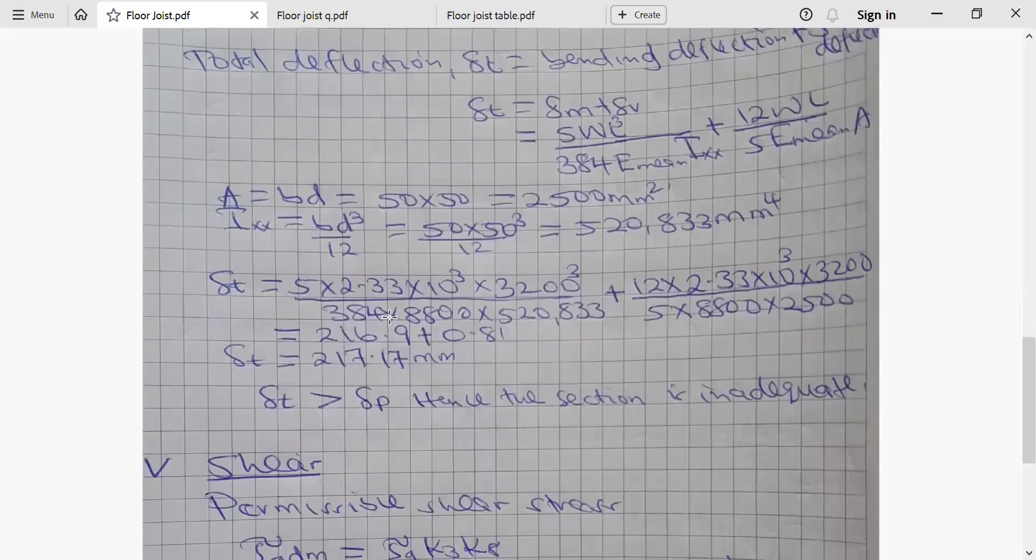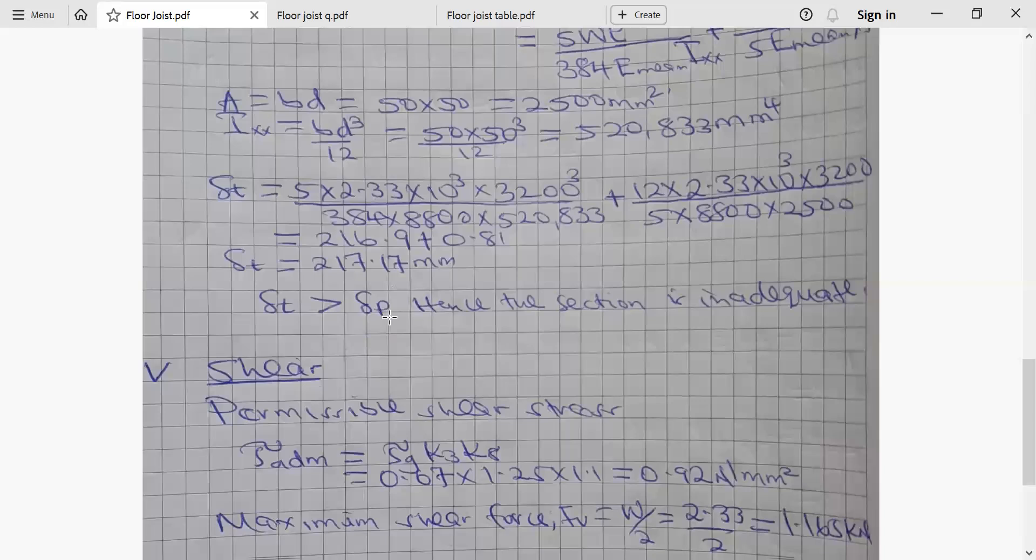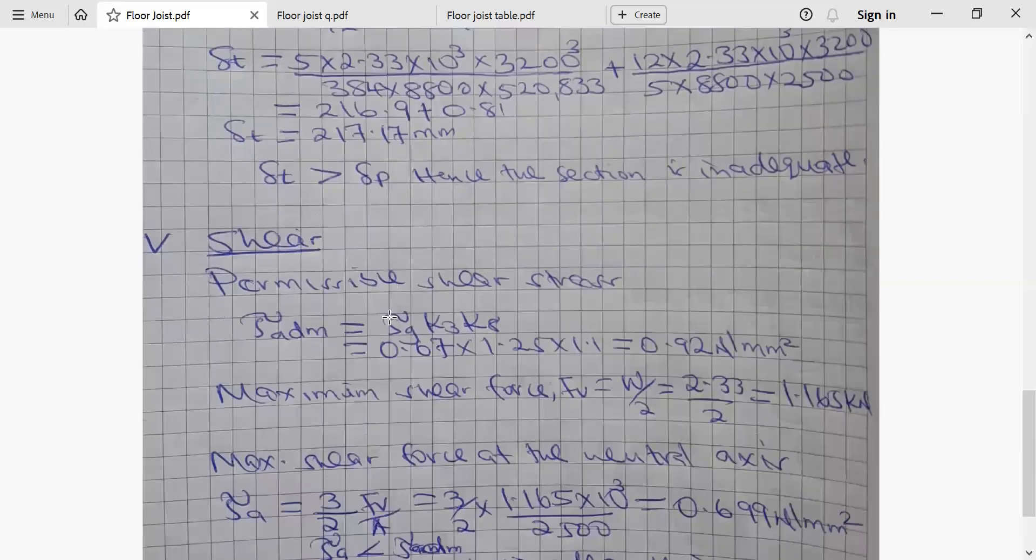Because the total deflection is more than permissible, we say the section is not adequate. The section is inadequate in terms of deflection. So deflection test has failed. Now, we go to the last check, which is shear.